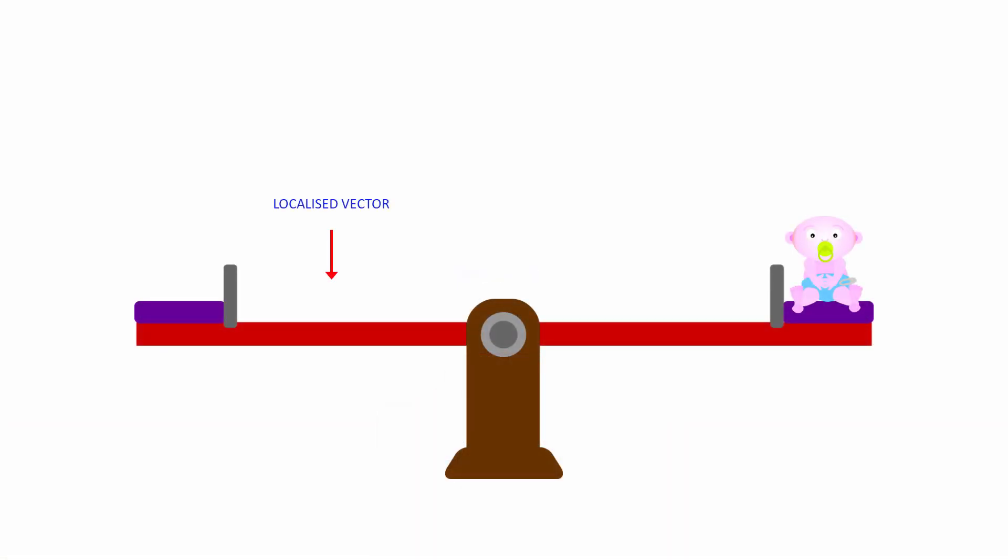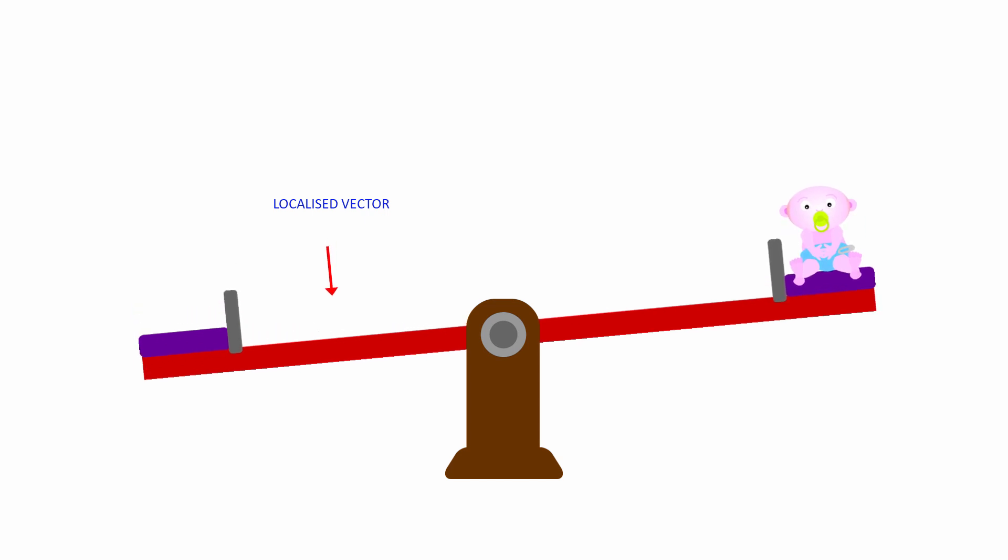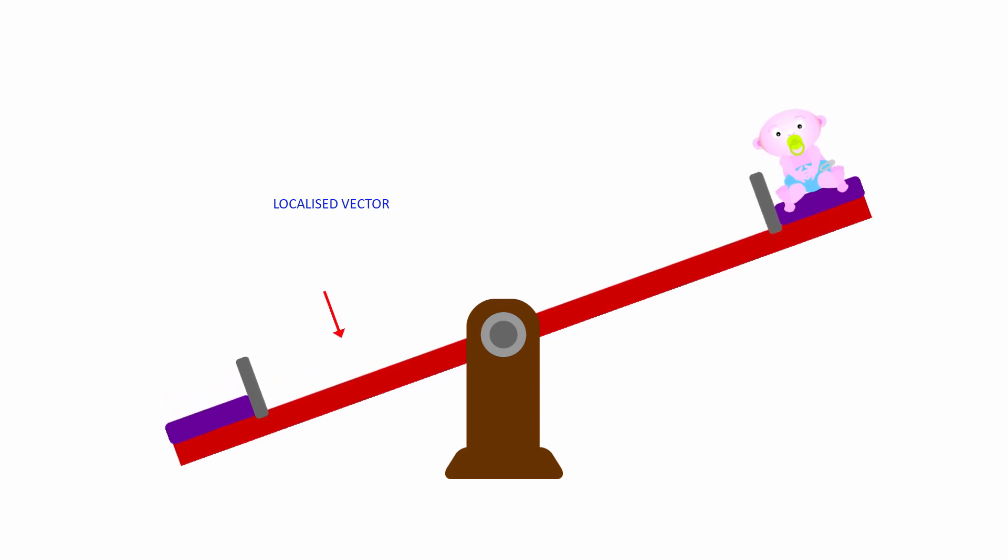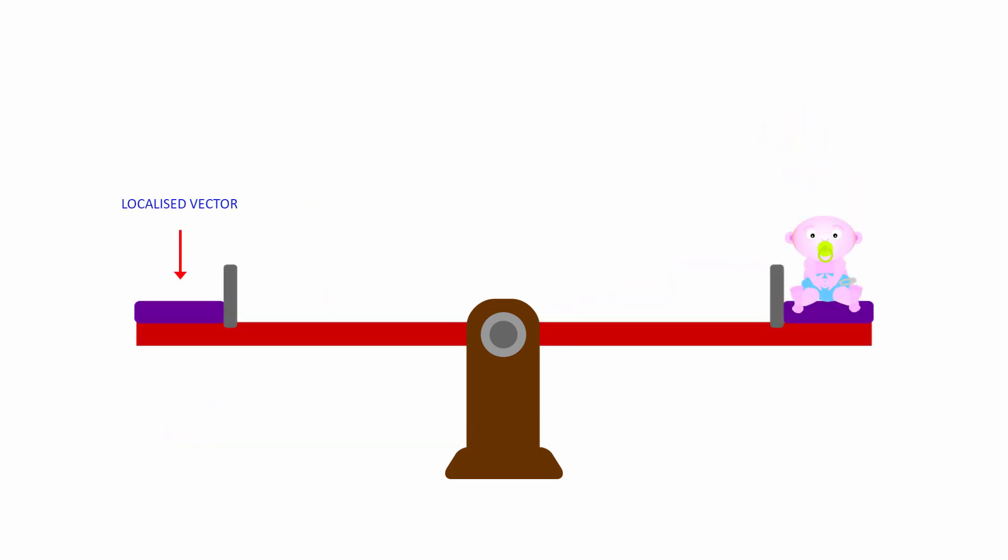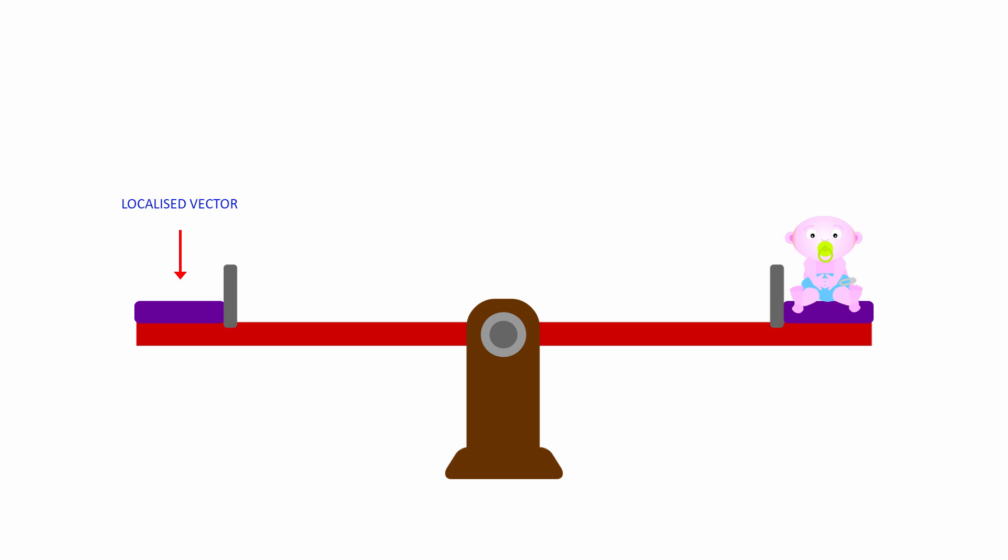A localized vector, also known as a fixed vector, is one in which its position is important. A force acting on a rigid object is a localized vector. When the force is applied, the object might move. This vector has magnitude and direction, but exactly where the force is applied might well have a bearing on how the object moves.